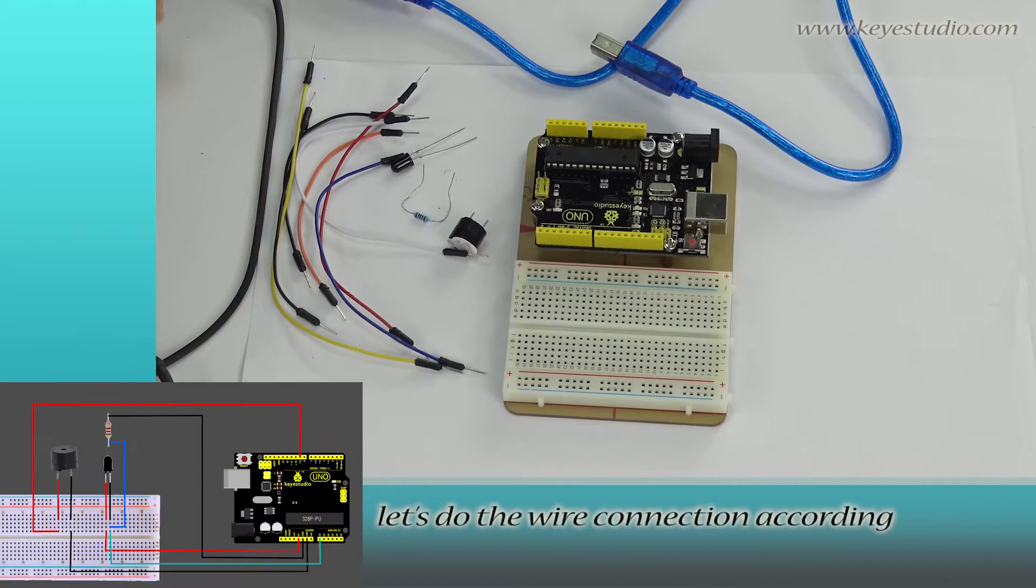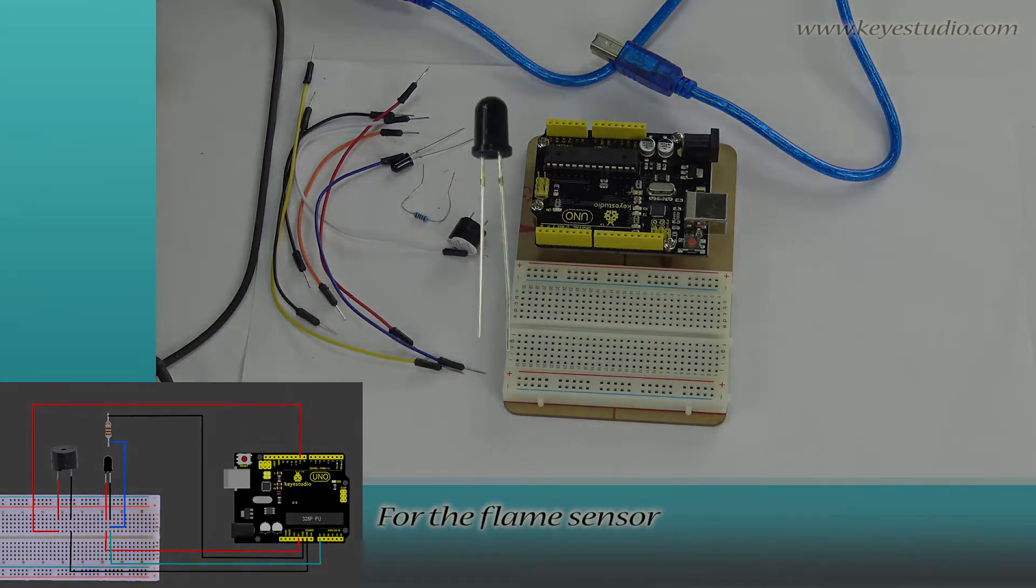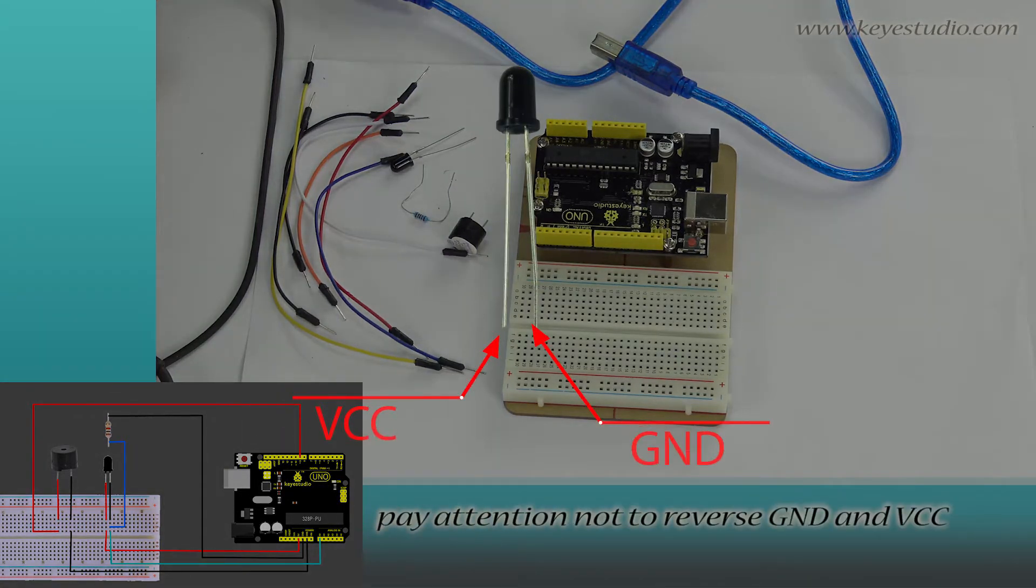First, let's do the wire connection according to the connection diagram. For the flame sensor, pay attention not to reverse GND and VCC.